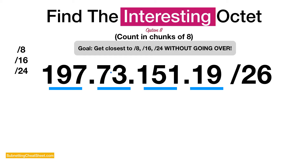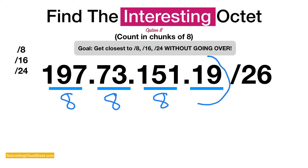The next method is to count in blocks of eight. For slash 26, you count: 8, 16, 24. You stop counting at 24 because adding another 8 gives you 24, which is the last multiple of 8 that doesn't exceed 26. That tells you this is the octet you need to focus on. That's what you can do if you go blank and can't figure out which octet to focus on.